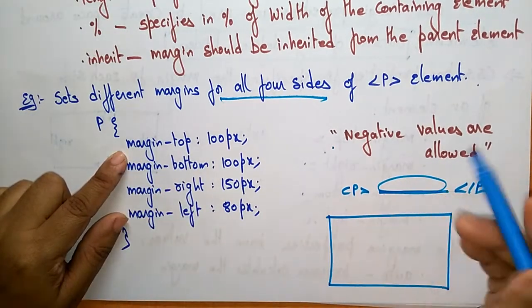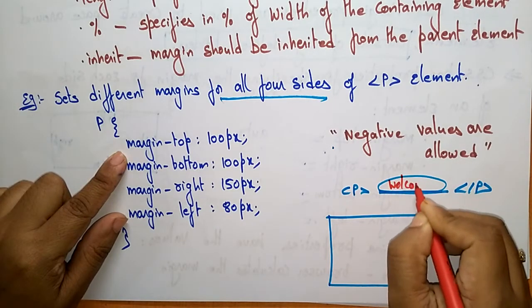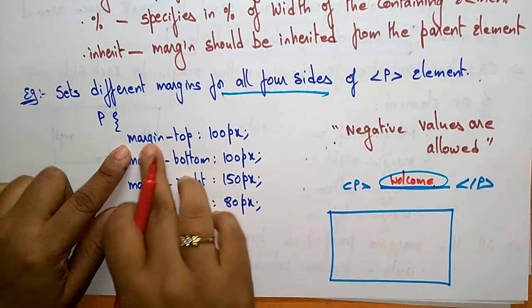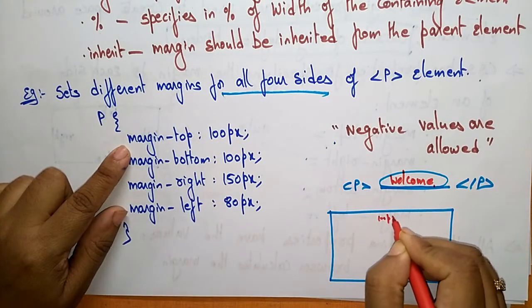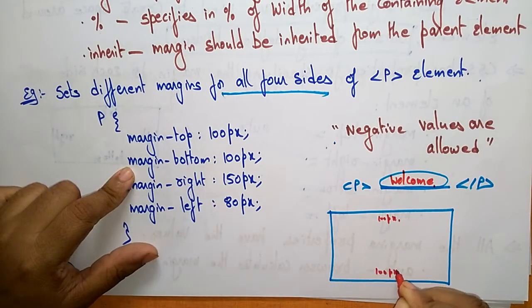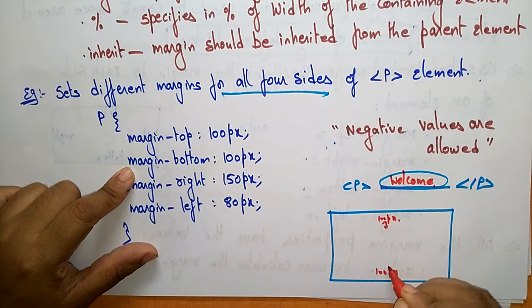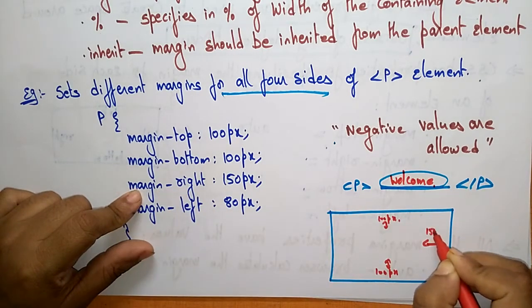The paragraph element, let me take that paragraph element as 'welcome'. So this message has to be printed. The margin-top is 100 pixels - just leave 100 pixel size. The margin-bottom is also 100 pixel size. The margin-right, let's take 150 pixels.